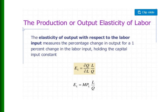The production or output elasticity of labor measures the percentage change in output for a one percent change in the labor input, keeping the capital input constant. It is given by (∂Q/∂L) × (L/Q). Since ∂Q/∂L is the marginal physical product of labor, the output elasticity of labor equals the marginal product of labor times L divided by Q.